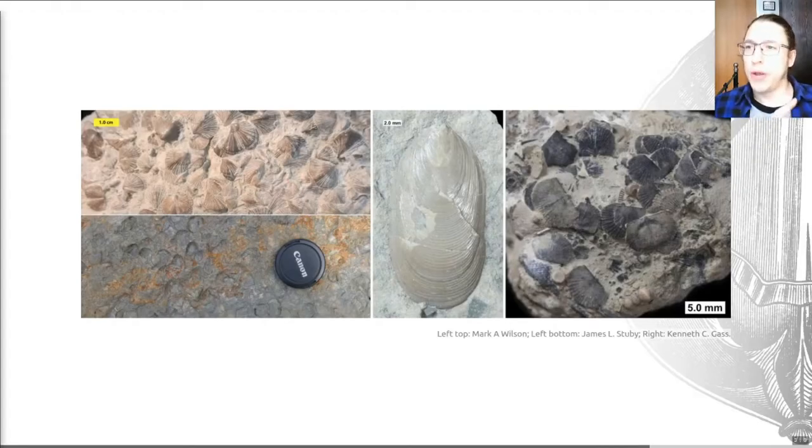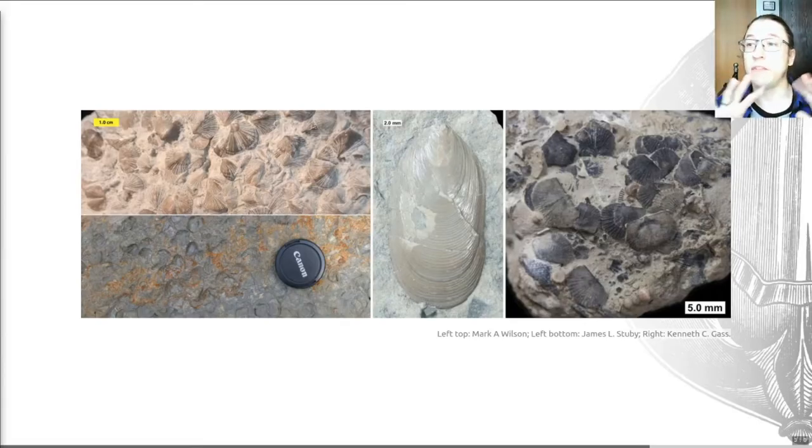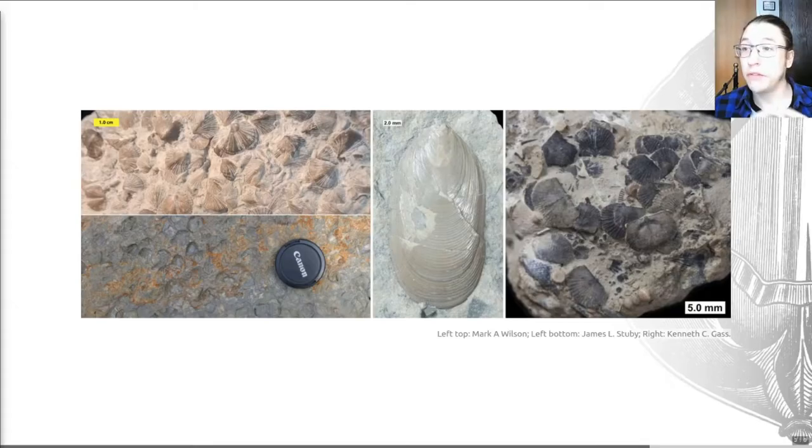A general point here is that rocks often have shelly materials found in differing amounts of fragmentation. In order to tell a brachiopod from a bivalve, those fragments have to be big enough to see the symmetry. If the fragments are big enough to see the symmetry of the shell, it's quite easy to tell them apart from bivalves.